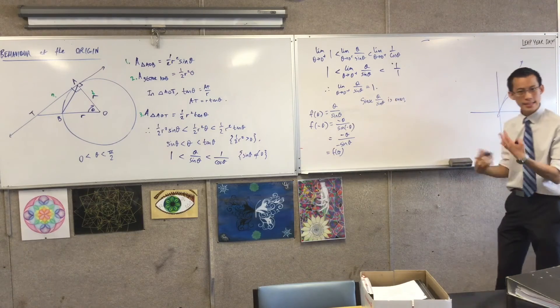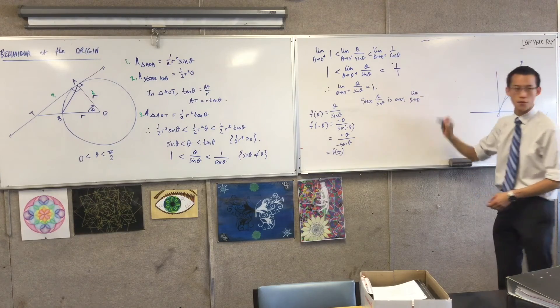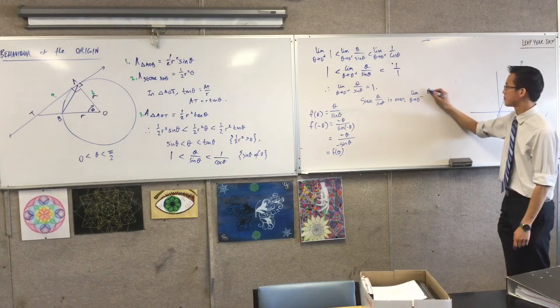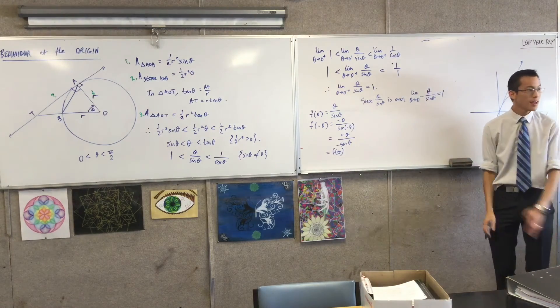Since theta over sine theta is even, I get the same behavior coming from the left. So I go theta approaching zero from the other side.